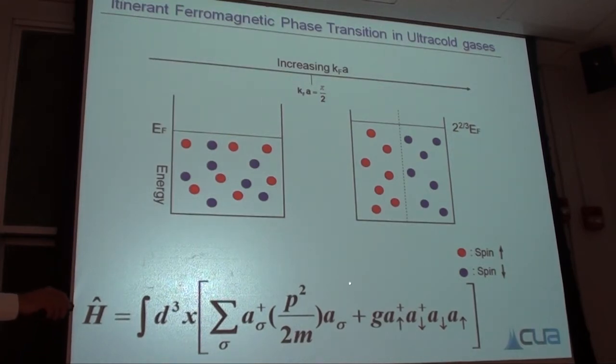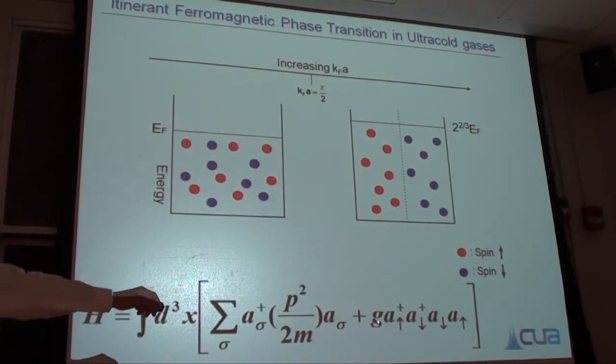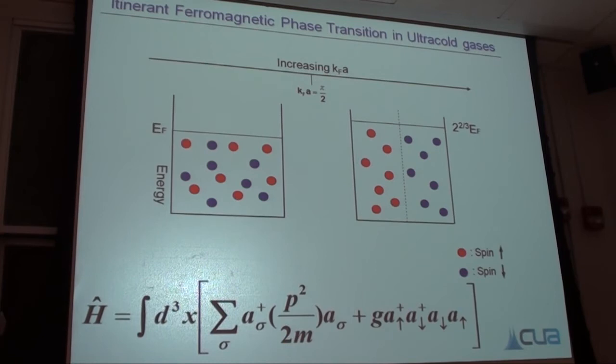Let's maybe in a cartoon picture understand what happens if we add repulsive interaction to the system. If I treat the system in a mean field theory and I say the stronger this interaction parameter is, the stronger are the interactions. We'll come to that later, whether this is justified or not.